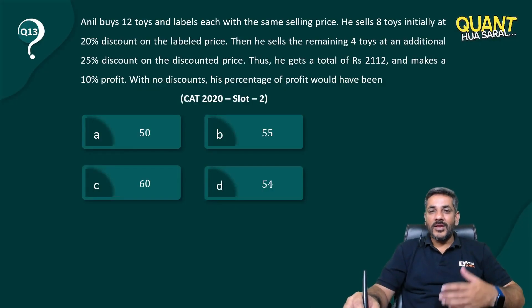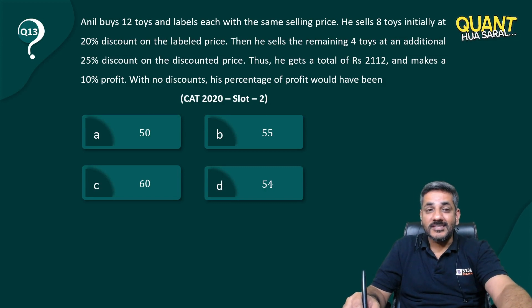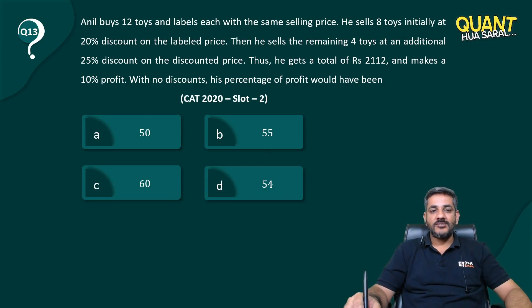Hello everyone, welcome to question number 13 of this series, Quant Hua Saral. Here is a question from CAT 2020 Slot 2. What does the question say? Anil buys 12 toys and labels each with the same